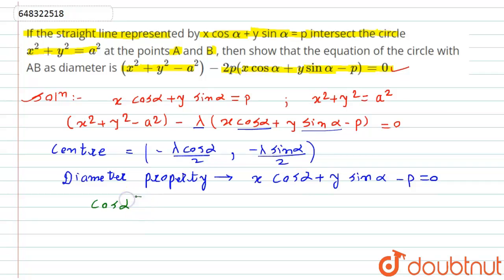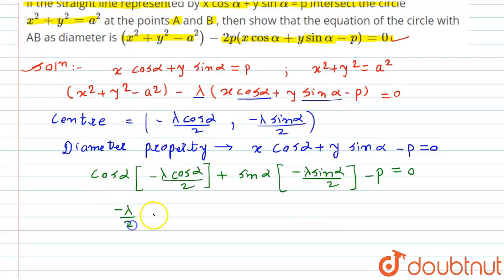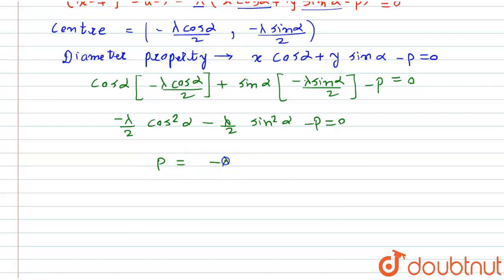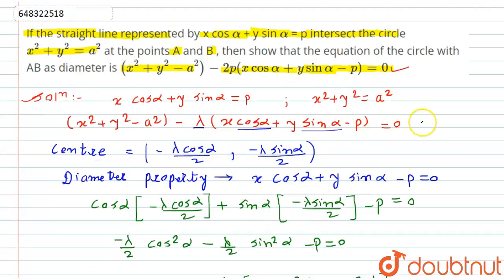Substituting, we get cos alpha times (minus lambda cos alpha divided by 2) plus sine alpha times (minus lambda sine alpha divided by 2) minus p equals 0. On multiplying, we get minus lambda divided by 2 times cos squared alpha, minus lambda divided by 2 times sine squared alpha, minus p equals 0. Taking p to the other side: p equals minus lambda by 2 times (cos squared alpha plus sine squared alpha). By the identity sin squared theta plus cos squared theta equals 1, this simplifies to p equals minus lambda by 2, which implies lambda equals minus 2p.